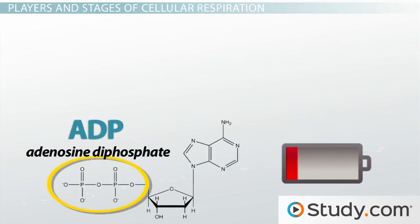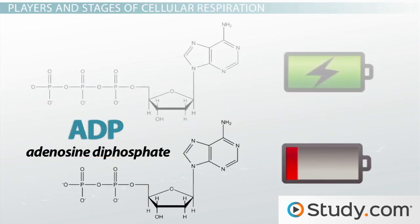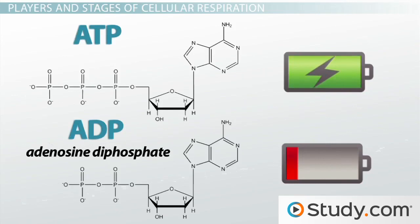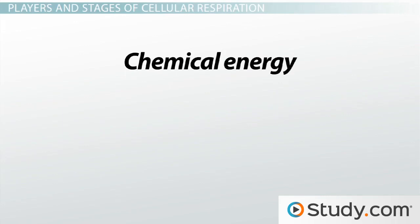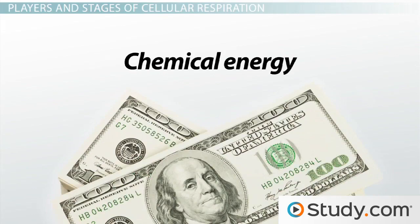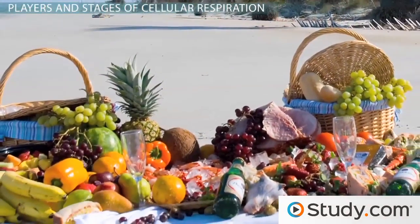You'll recall that ADP is like an uncharged battery. The big goal of cellular respiration is to charge ADP to its fully energized form, otherwise known as the product ATP, or adenosine triphosphate. ATP is simply an ADP molecule with a third phosphate group. Take a good look at this chemical structure, because this is what cellular respiration is all about. ATP is the chemical energy that cellular respiration strives to make. It's essentially the chemical currency of life, used to pay for all the reactions that require energy in the cell. It's the energy that we get from our little picnic outdoors.